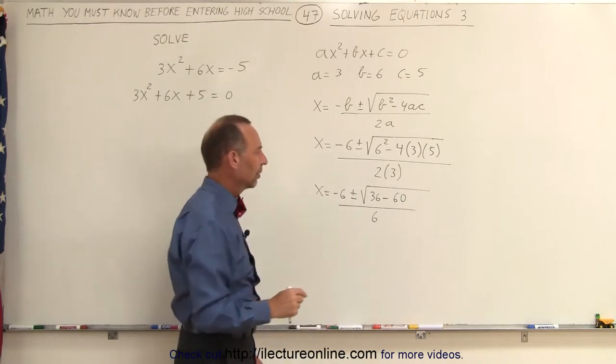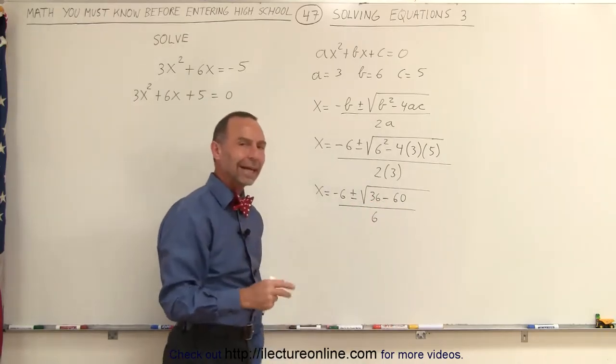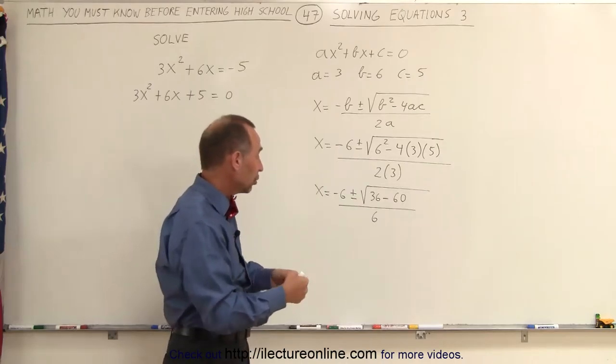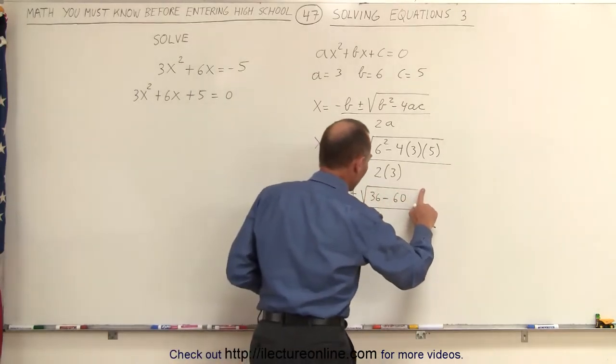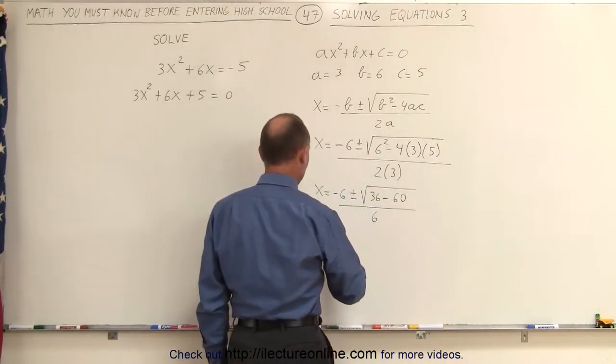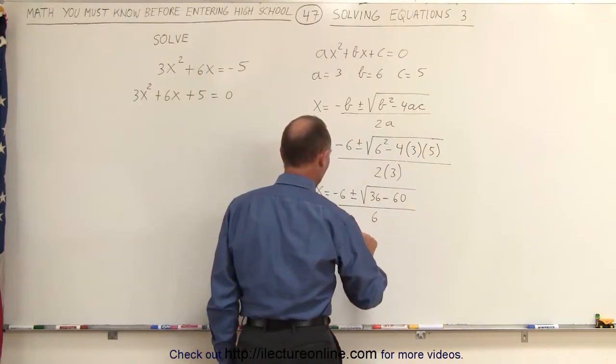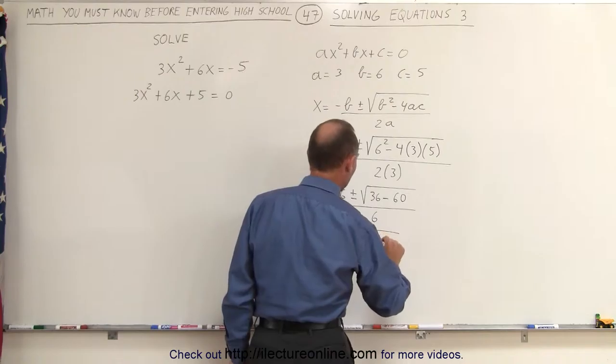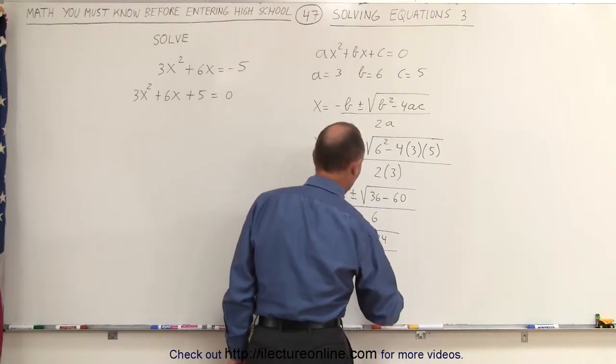Now you may say, well, wait a minute. 36 minus 60, isn't that a negative number? And when you have a negative number under a radical, you don't have a solution. Well, not quite so fast. Let's see here. x is equal to -6, plus and minus the square root of 36 minus 60, which is -24, divided by 6.